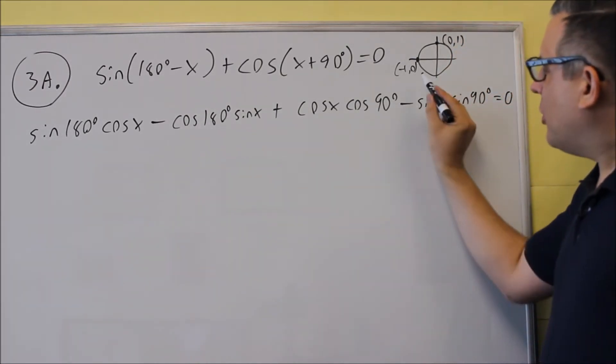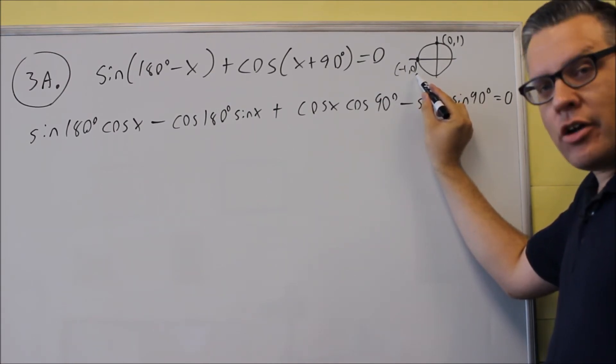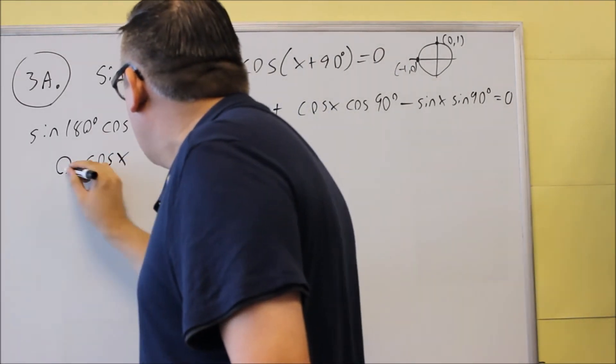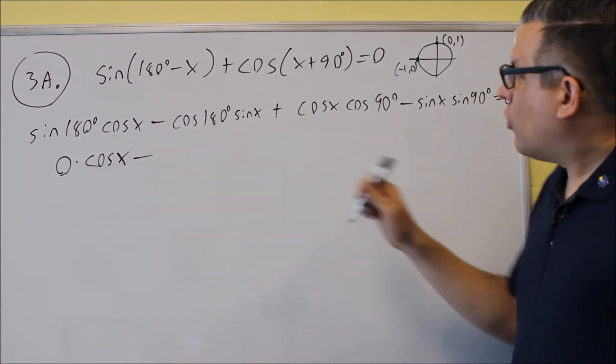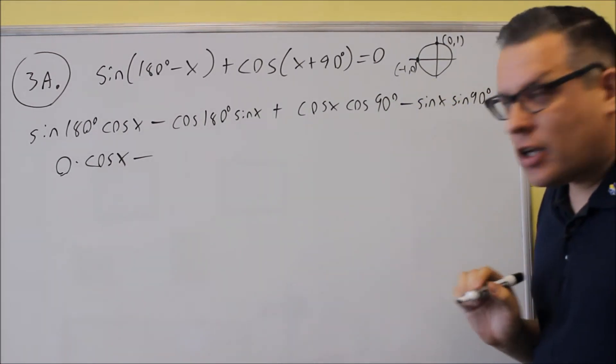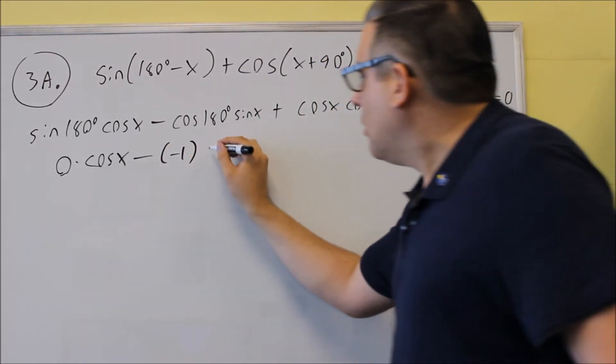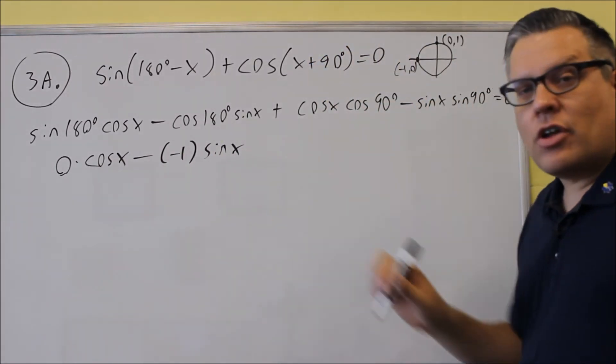For sine 180, that would be the y value at 180 degrees, which for this drawing here it's going to be zero. So put zero, you have zero times cosine x. Next we've got cosine 180. That's the x value at 180. That would be negative one. So let's put in negative one for cosine 180 and then for the x's I don't know what that is so I just leave it as sine x.